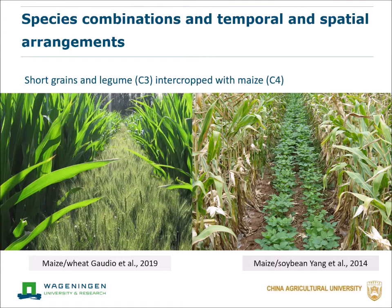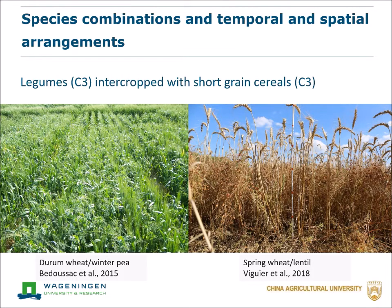We also know that there are many different intercropping systems. For instance, the temporal and spatial arrangements differ, such as simultaneous intercropping and relay intercropping, or alternate row intercropping and mixed intercropping. The species combinations also differ, such as short grains and legumes intercropped with maize — the C3 and C4 intercrops — and legumes intercropped with short grain cereals, which are C3 and C3 intercrops.